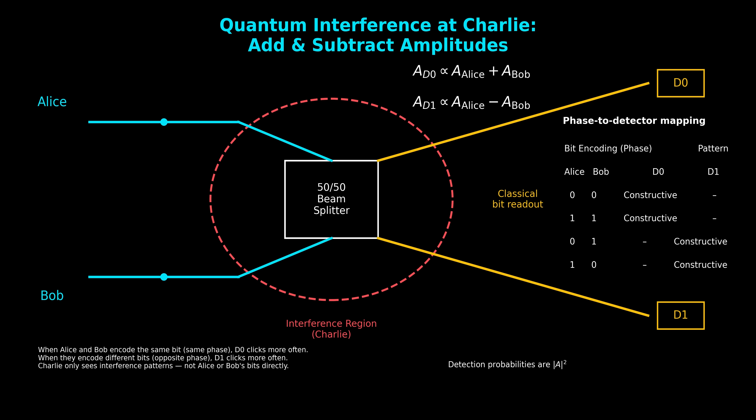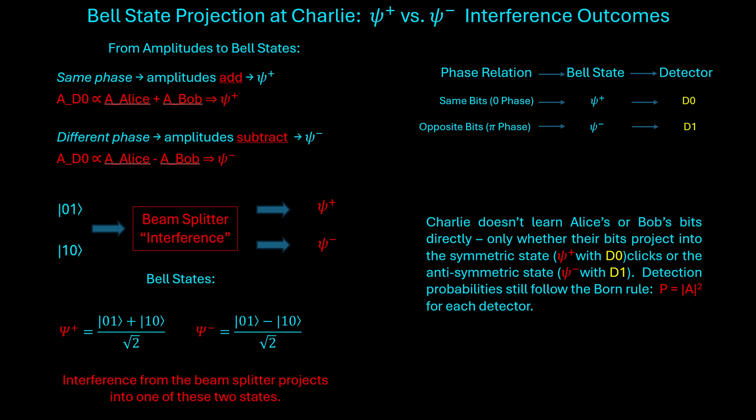This image shows how Charlie's detectors reveal which Bell state Alice and Bob's photons collapse into, and how that depends entirely on the relative phase between their qubit states. If Alice and Bob send photons with the same phase, the amplitudes arriving at Charlie add together — constructive interference occurs and the system collapses into the symmetric Bell state psi-plus. A_D0 is proportional to A_Alice plus A_Bob, which produces psi-plus.